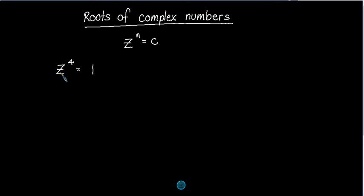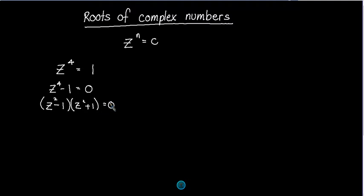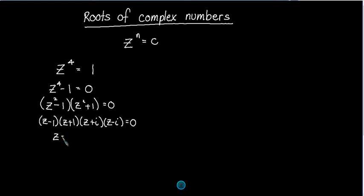Plus or minus one, because one to the power of four is one, minus one to the power of four is one. Are there any other roots? Yes — plus or minus i. Now that might not come to you just by looking, but that is where we would go: we could factorise this, bring it over the other side, this is difference of two squares, and then yes, I could factorise that — difference of two squares again. With the plus, that gives plus i and minus i. We end up with z equals those four roots.